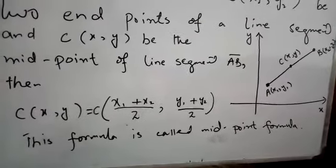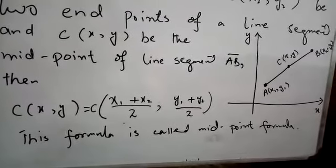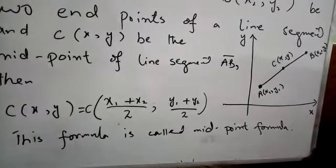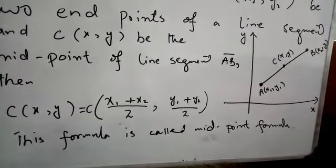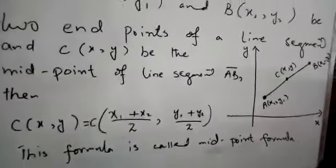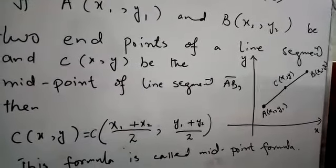That is, midpoint is for X we have x1 plus x2 divided by 2, and for Y we have y1 plus y2 divided by 2. Now how to use this formula?